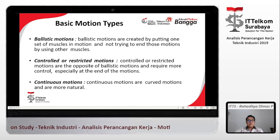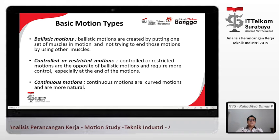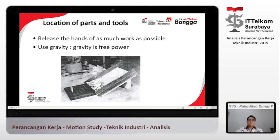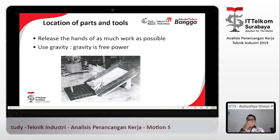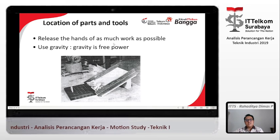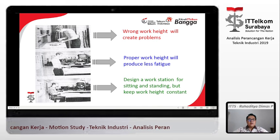Ada basic motion types: ballistic motions — characterized by putting one set of muscle in motion, not trying to end those motions by using other muscles; control or restricted motions; dan continuous motion. Contoh location of parts and tools menggunakan gravity — gravity is free power, karena menggunakan gravity itu gratis, gaya itu sudah ada di bumi. Release the hands of as much work as possible — kalau bisa tangan kita hindari untuk memindahkan.